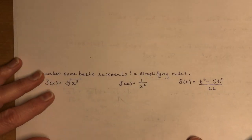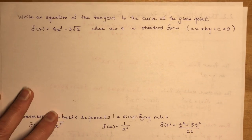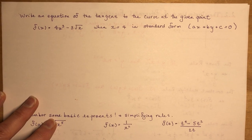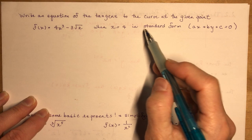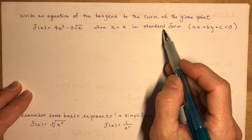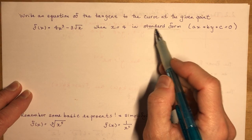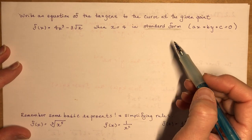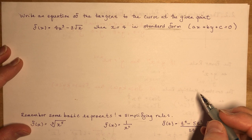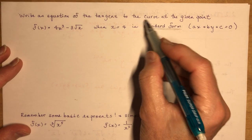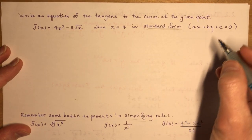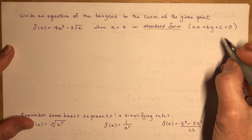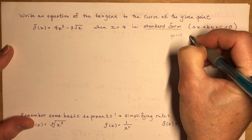Now let's look at writing equations of tangent lines. A big deal in calculus is writing tangents — finding the equation of a tangent, sometimes in standard form. Your textbook likes to use standard form, so if that's what you're asked for, that's what you give them. To find the equation of a tangent, you need a point and a slope, just like finding the equation of any line.